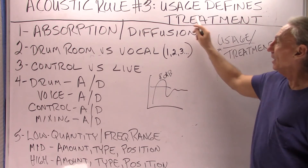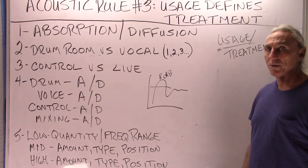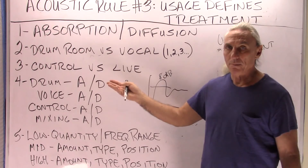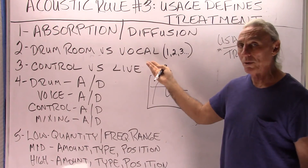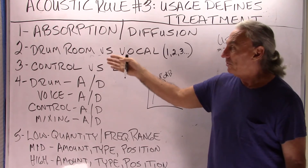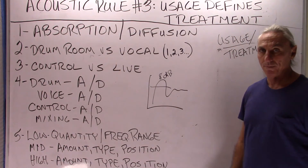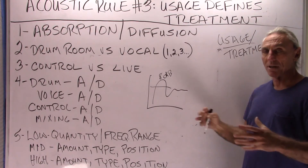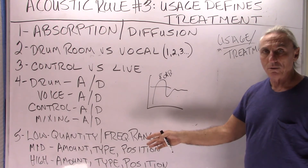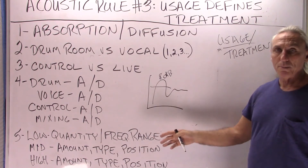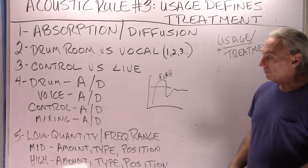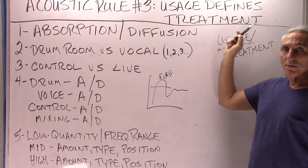There is no one-size-fits-all. First define what you're trying to do in the room and don't try to do too many things in one room. A drum room and a vocal room couldn't be more different — you wouldn't record a drum in a vocal room. Usage and treatment have to be related; there's a synthesis, a balance, a synergy between those. You always have to determine how much low frequency absorption you need, where to put it, and what type to use depending on the magnitude of the problem — and the same holds true for middle and high frequency. Usage defines treatment.